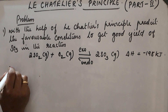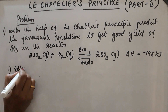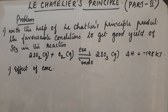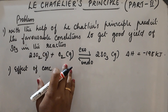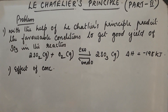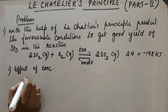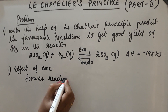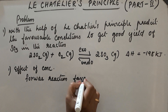First case — effect of concentration. If we add the reactants SO₂ and O₂ to the mixture, as the concentration increases, in order to get more product, the forward reaction is favored. So the equilibrium will shift in the forward direction to give better yield.